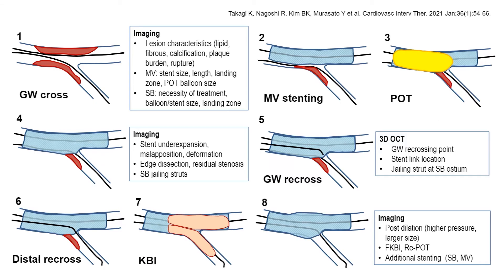This is the scheme of imaging guidance in bifurcation intervention. In pre-PCI, imaging of both main vessel and side branch is necessary for lesion assessment, device sizing, and decision of treatment strategy. Second imaging is performed after main vessel stenting to assess stent expansion, malapposition, and jailing strut pattern. After guidewire recrossing, confirmation of the recrossing point by 3D OCT is recommended. After kissing balloon inflation or side branch dilation, imaging should assess final stent expansion and apposition, deformation, and necessity of additional treatment.